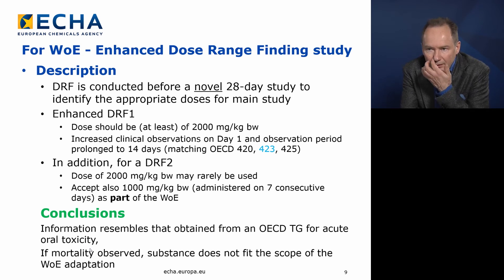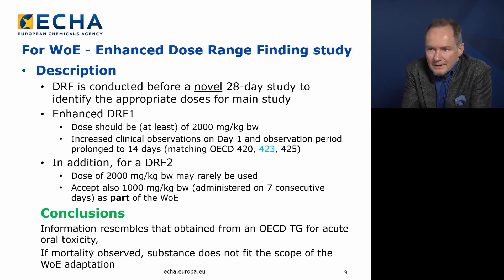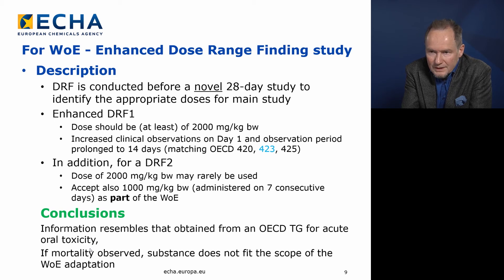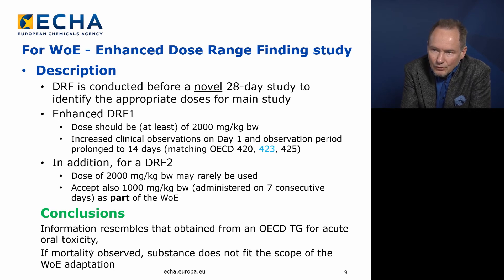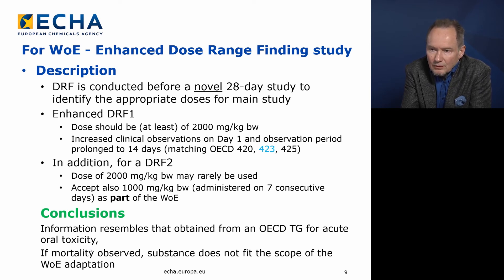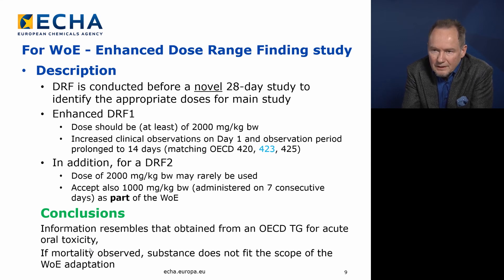Just a few words on the dose range finder. They are usually done before the 28-day subacute study in order to have a first idea of the level of toxicity expected, and also to set the dosing right. So if the substance is very toxic, then of course the maximum dose has to be much lower than 1,000 mg/kg in some cases. It's basically a first advisory on how to run the 28-day study.